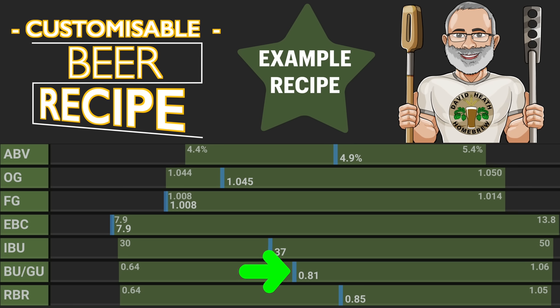The statistic that shows the ratio of both bitterness and alcohol is known as BUGU, which is short for Bittering Units to Gravity Units as a ratio. For this recipe we have a BUGU of 0.81 as you can see. This essentially tells us how bitter the recipe is in balance with the alcohol.